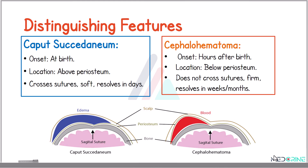When comparing caput succedaneum and cephalohaematoma: caput succedaneum occurs during birth while cephalohaematoma develops hours after birth. Caput succedaneum is above the periosteum, crosses suture lines, is soft on palpation, and resolves within days. Cephalohaematoma is below the periosteum, does not cross suture lines, is firm on palpation, and resolves in weeks to months.